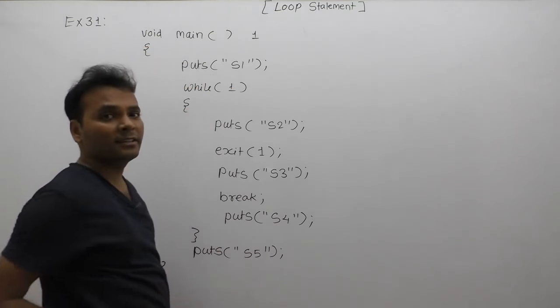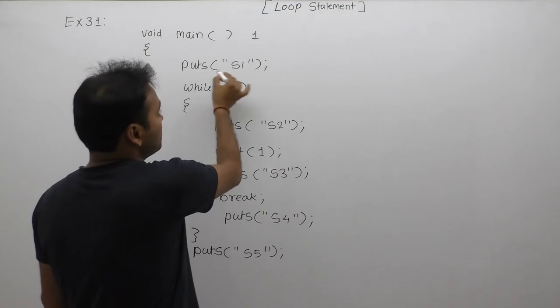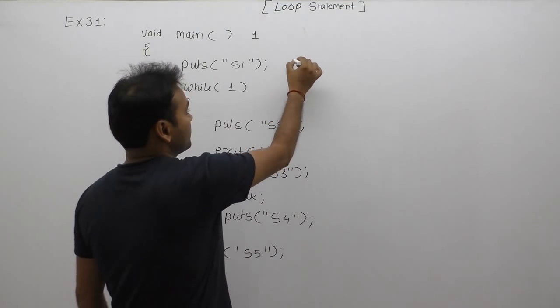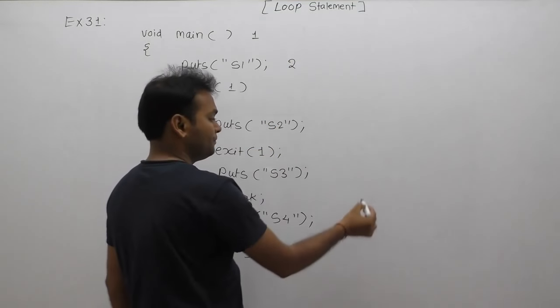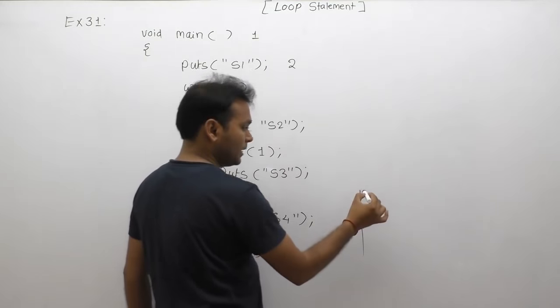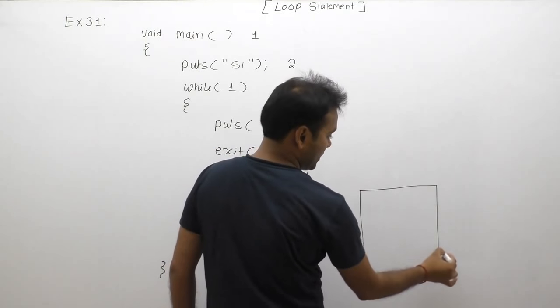Control enters the main function, goes to the puts statement. In that case, as we are discussing this operation, same string message puts function one more time...